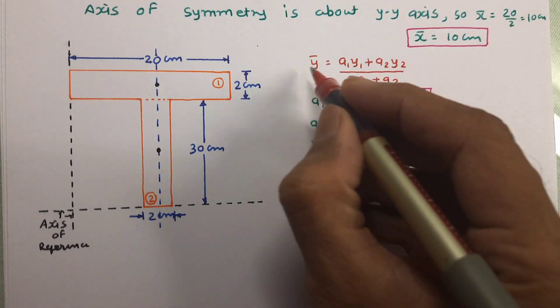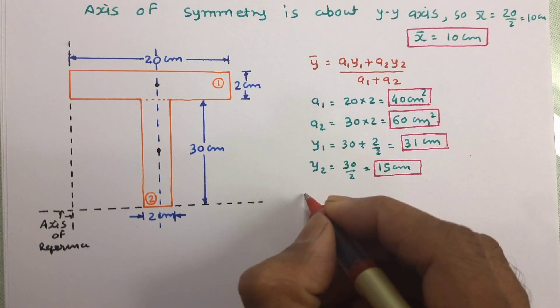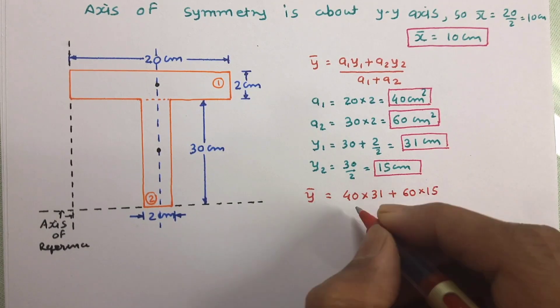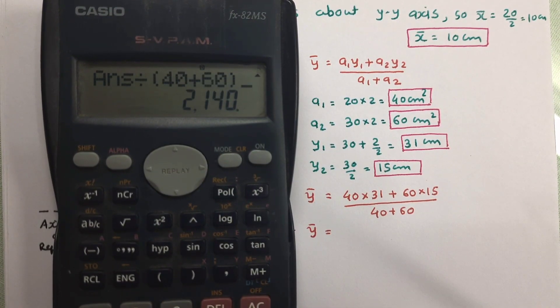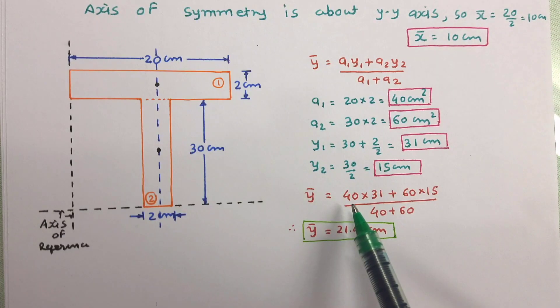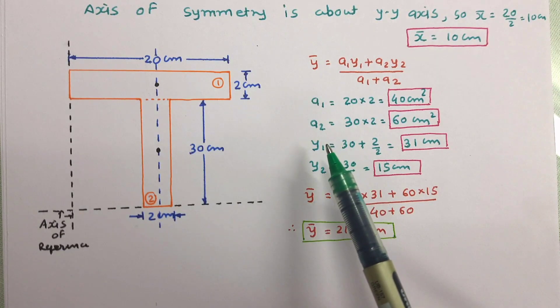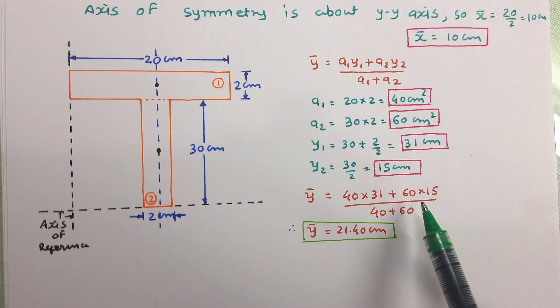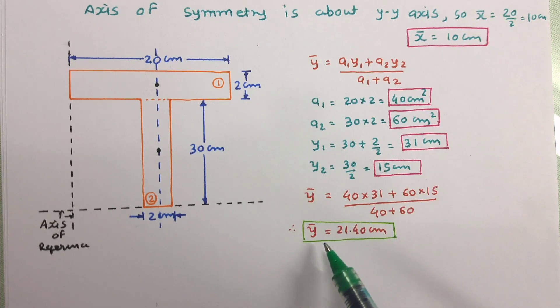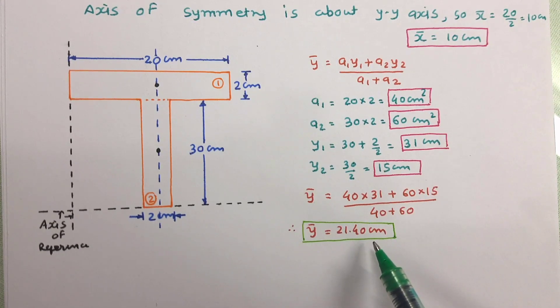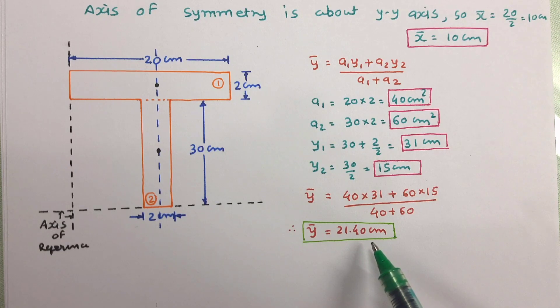Now equate all the value in this equation to get y bar. So here all value of a1, a2 and y1, y2 are equated. And finally y bar has been obtained as 21.40 cm.